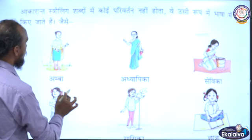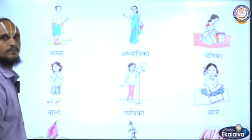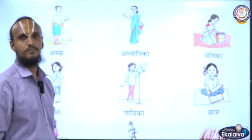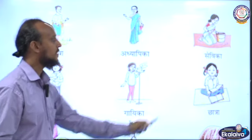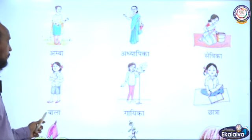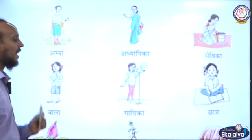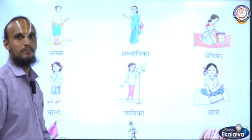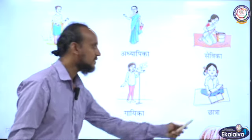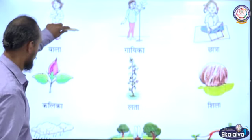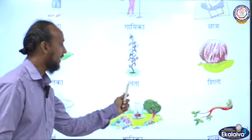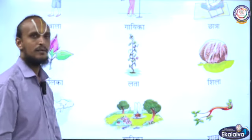The first word is Amba. Adhyapika. Sevika. Bala. Gaika. Chatra. Kalika. Lata. Shila.